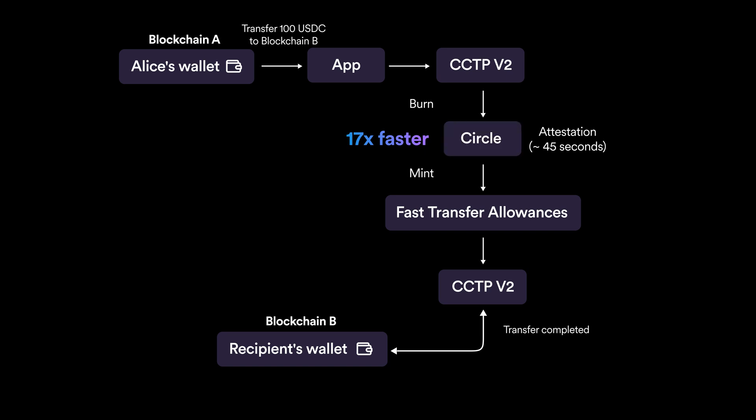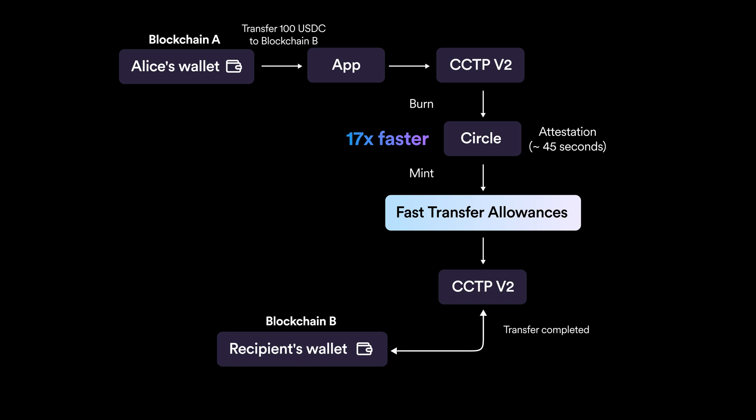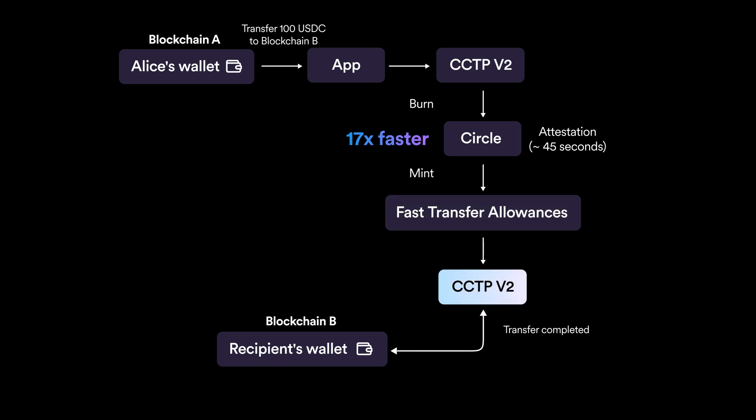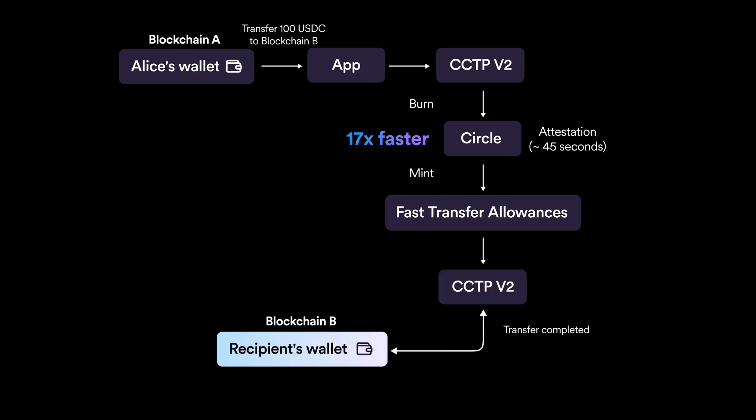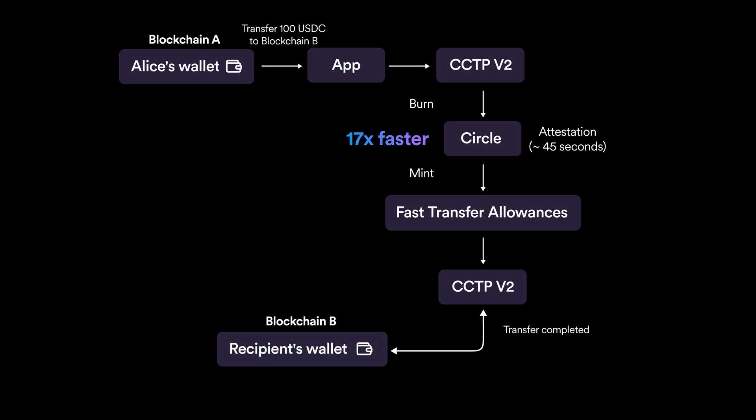Circle's fast transfer allowance backs the transaction, allowing USDC to be minted on blockchain B before full finality is reached on the source chain. This means Alice's recipient gets the USDC almost instantly, though a fee is applied for using fast transfer. Once finality catches up, Circle replenishes its allowance, ensuring the system remains stable. This use case is perfect for traders, liquidity providers, and users who need fast cross-chain transactions, such as retail purchases where delays are unacceptable.